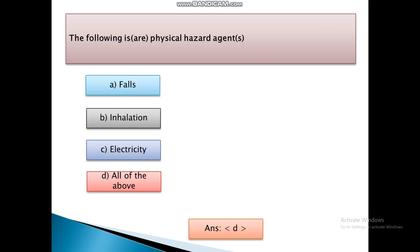The following is or are physical hazard agent or agents. Options: first Falls, Inhalation, Electricity, and all of the above. And the answer is D, that is all of the above. These are the physical hazard agents.